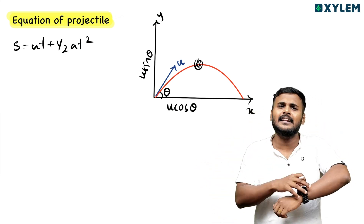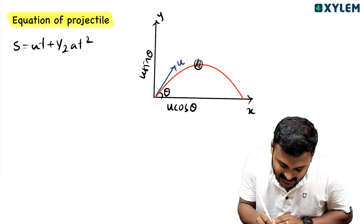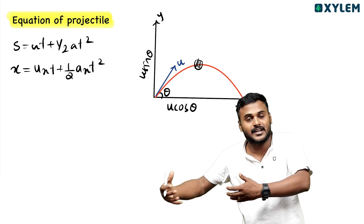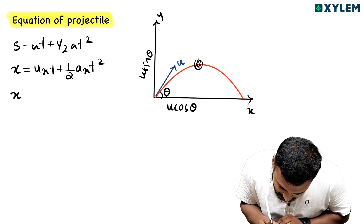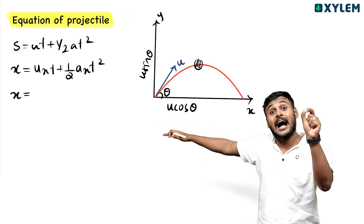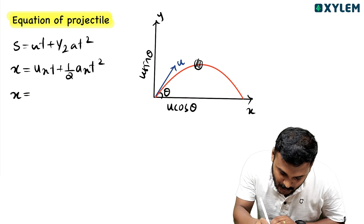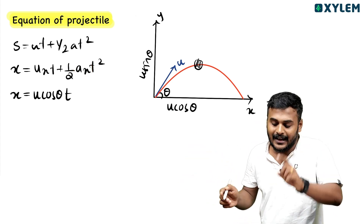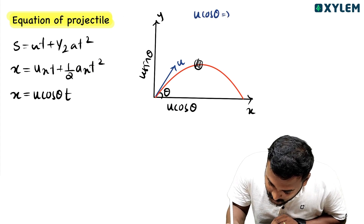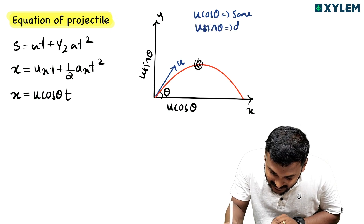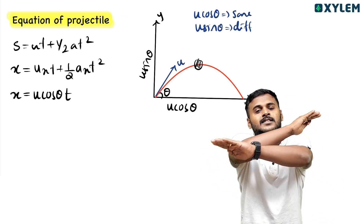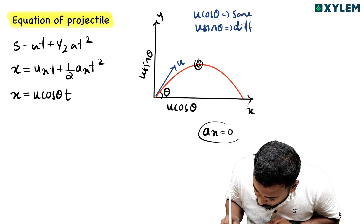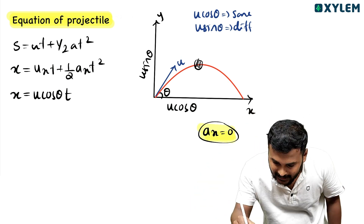This is a kinematic equation for the two different directions. For the x-direction: x equals uₓt plus half aₓt squared. The x-component of velocity is u cosθ, so x equals u cosθ into t. U cosθ is always the same in the x-direction, and the x-direction acceleration is zero, so x equals u cosθ · t.